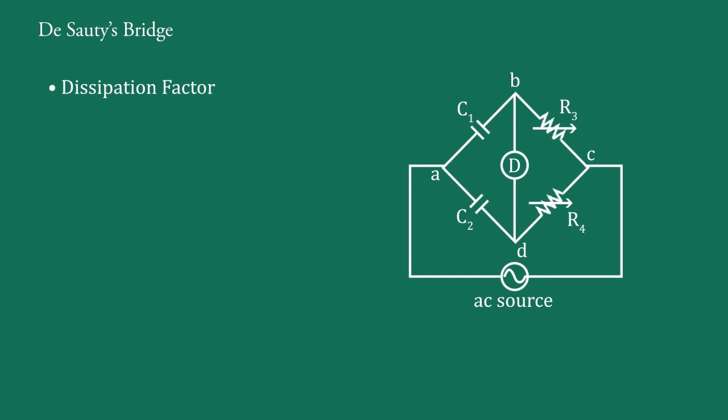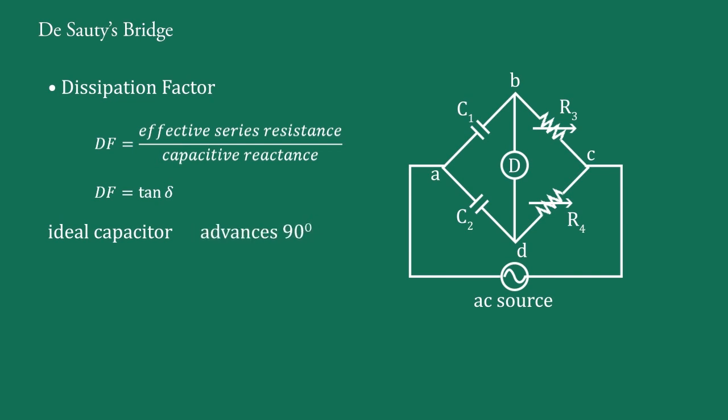Dissipation factor. DF. In AC circuits, dissipation factor is simply the reciprocal of Q. Or, DF is defined as the ratio of the effective series resistance to the capacitive reactance. It is also known as the tangent of the loss angle. When an AC voltage is applied to an ideal, that is pure and perfect capacitor, the current advances 90 degrees in phase. In case of a practical, that is imperfect capacitor, current advances in phase is π/2 minus δ.